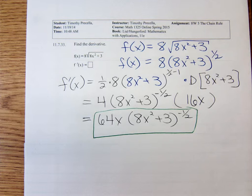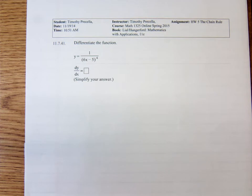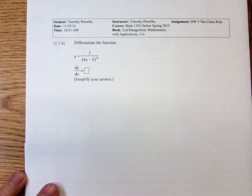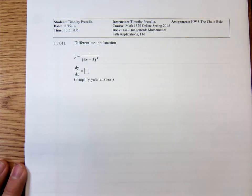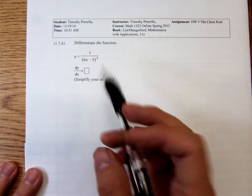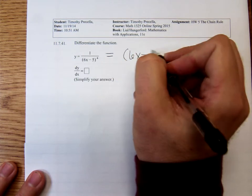Here's another one: y equals 1 over 6x minus 5 to the fourth power. You could use the quotient rule here, but I wouldn't recommend it. Instead, rewrite using a negative exponent — move the 6x minus 5 to the fourth up to get 6x minus 5 to the negative 4 power. Now the problem is tailor-made for the generalized power rule.